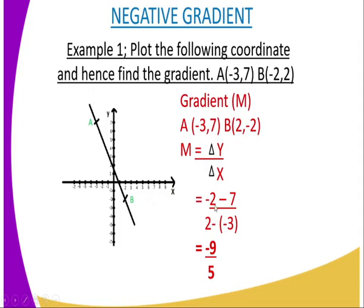Then change in y: you are supposed to get negative 2 as far as the y is concerned. You calculate the change in y, that is negative 2 minus 7, you will get negative 9. And the change in x should be 2 minus negative 3. The negative signs follow one another, the sign changes to positive, therefore the answer becomes negative 9 over 5.